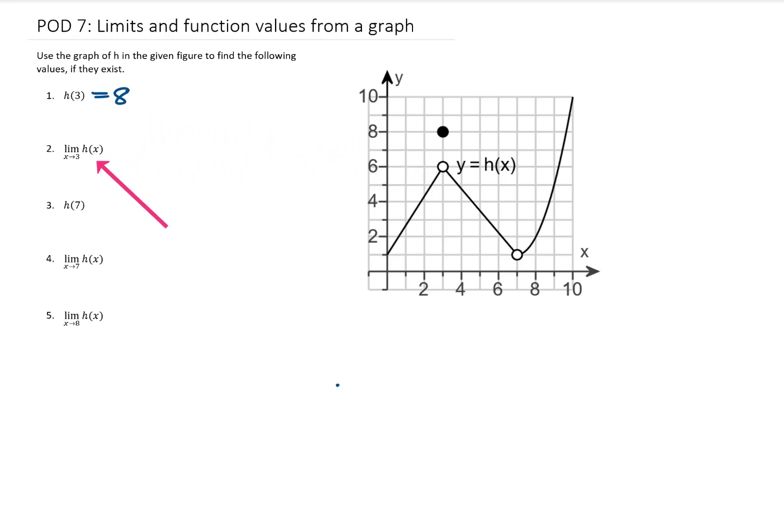Next, we have the limit as x approaches 3 of h of x. So when we're finding a limit as x approaches 3, usually I imagine myself as a little ant walking along this function towards the x value of 3. And as I get closer and closer to x equals 3, what does my y value approach?